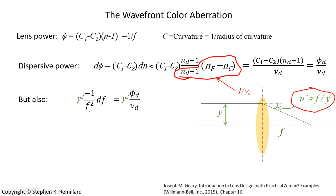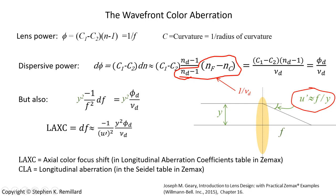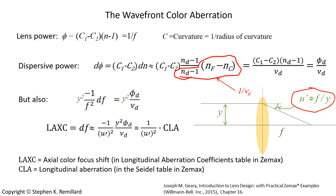Going back to the expression, we see f squared and y squared, and u' squared in the denominator — the refraction angle relative to the horizontal. Rearranging gives an expression for the shift in focal point between two different colors of light. In Zemax, that's called LACX, and it is the axial color focal shift: 1 over u' squared, times y squared times phi_d over nu_d, measured in millimeters. CLA is the portion y squared times phi_d over nu_d — the longitudinal aberration which shows up in the Seidel table in Zemax. Given the catalog Abbe number using the difference in F and C light, we have the focal shift between F and C light.